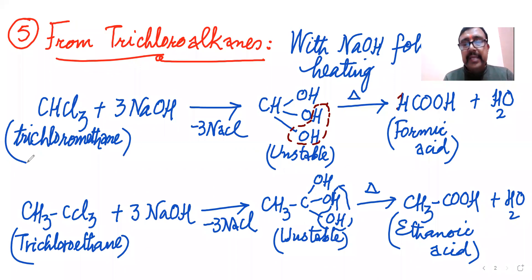It loses a molecule of water immediately upon heating and becomes CH3COOH plus water. It is ethanoic acid or acetic acid. This was from trichloroalkanes, whether chloroform or trichloroethane. Now after this fifth method of preparation, sixth is.